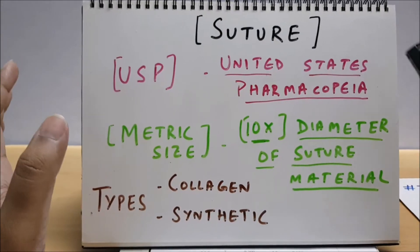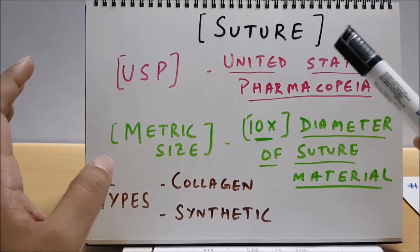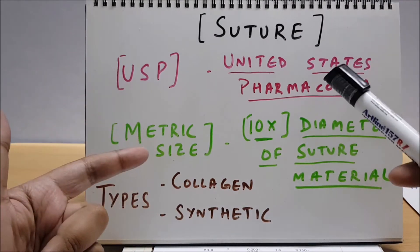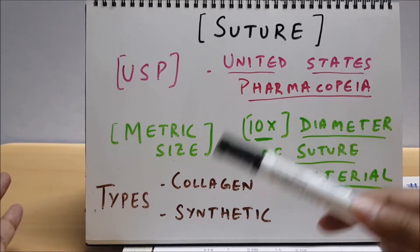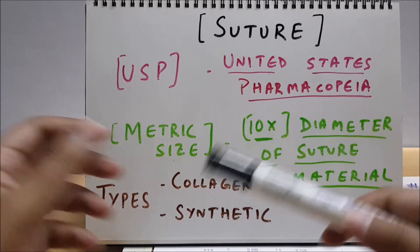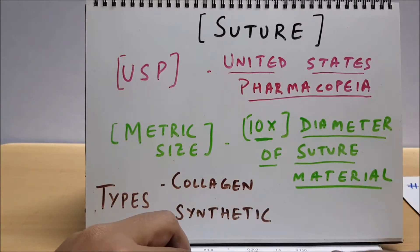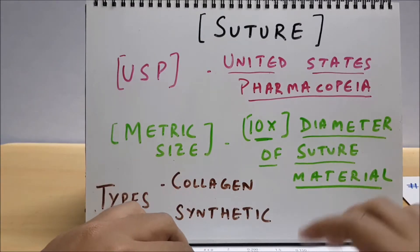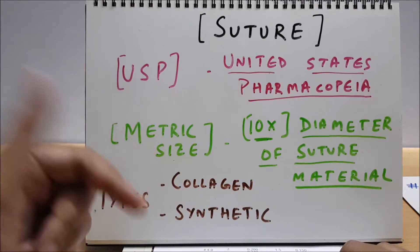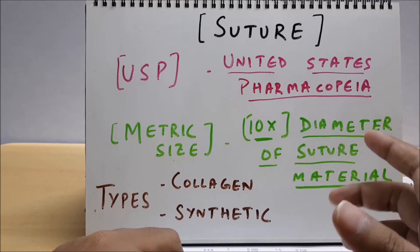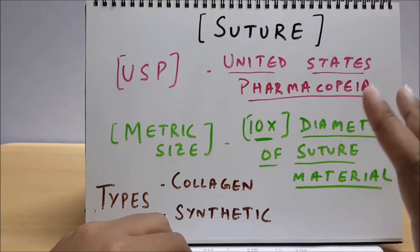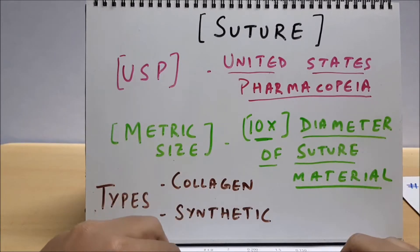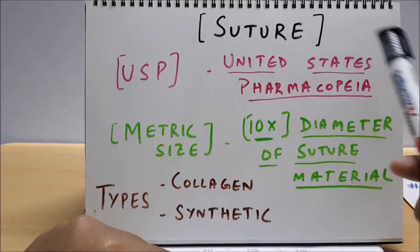After watching this video completely, you will really be very sure about this concept: USP metric size sutures, and what you see in cc behind the pack, and how they differ between collagen and synthetic sutures. I've seen many people confusing between USP and metric size, and this is very irritating. So let us clear the concept today. Completely watch this video. Let us start with some basic aspects of suture.